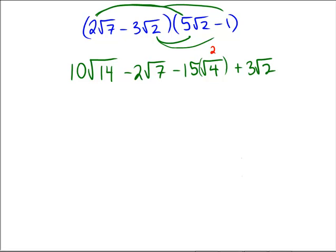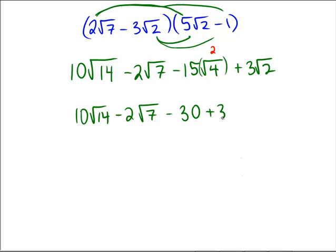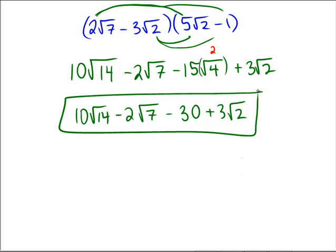The final answer is 10√14 minus 2√7. Remember, √4 is 2, so we have minus 15 times 2, which is minus 30 in that position, plus 3√2. So the final answer is 10√14 minus 2√7 minus 30 plus 3√2.